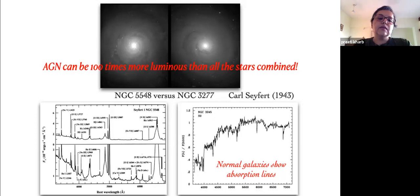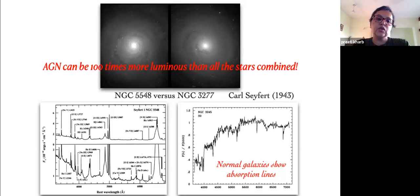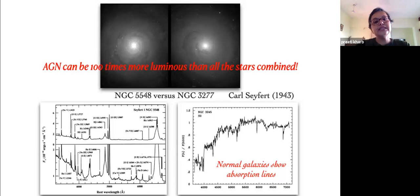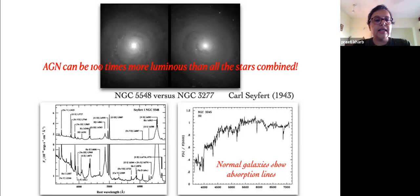In these and other similar galaxies found later, it was found that the star-like nucleus could be so luminous that its luminosity could be greater than that of all the stars in the galaxy, or even a hundred times larger. These star-like nuclei have come to be known as active galactic nuclei, or AGN. This luminous emission is basically due to the release of gravitational energy as matter falls onto supermassive black holes.